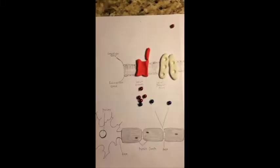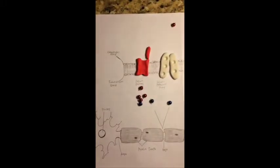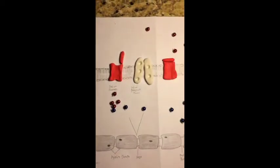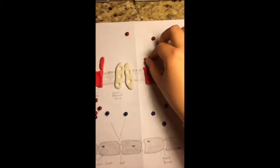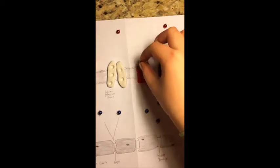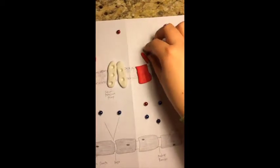Depolarization continues along the axon as the adjacent voltage-gated sodium channels are affected and open up to allow more sodium ions to enter the cell. This continuous movement of making the intracellular space positive relative to the extracellular space is action potential.